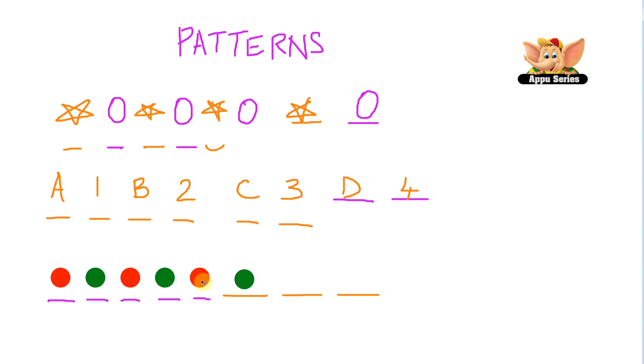Now, after this, what should we have here? After a green circle, you can see we have a red circle. So here, we should have a red circle too. And then, another green circle. Wow, this is a lot of fun, isn't it?